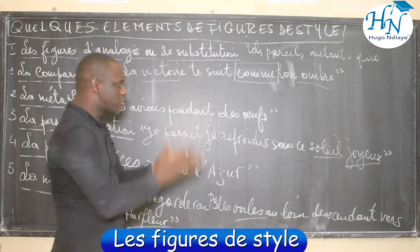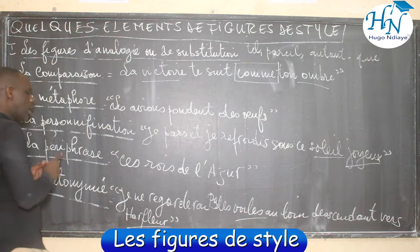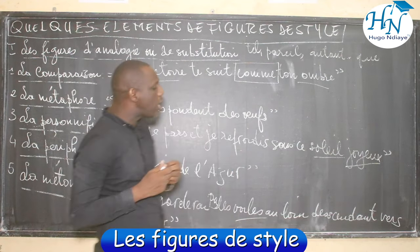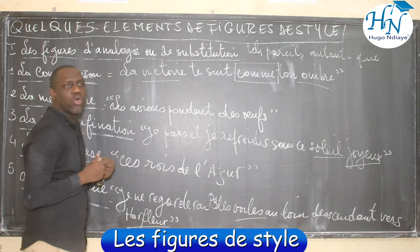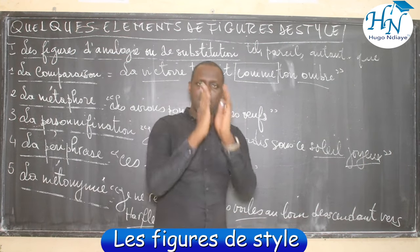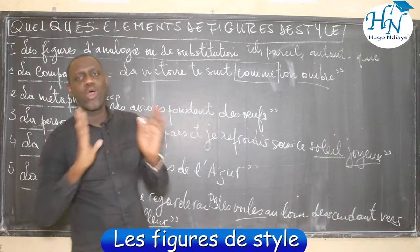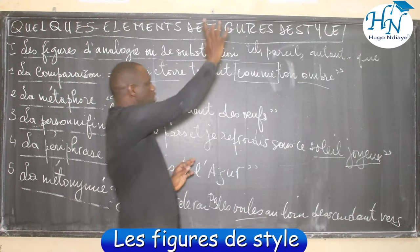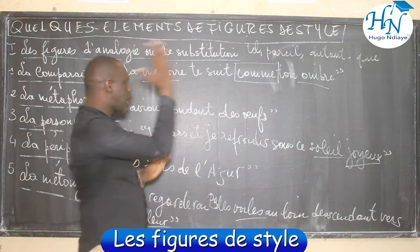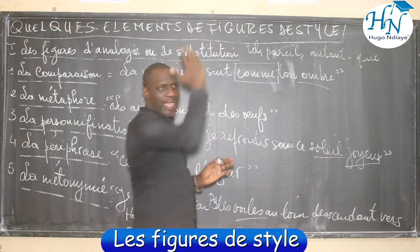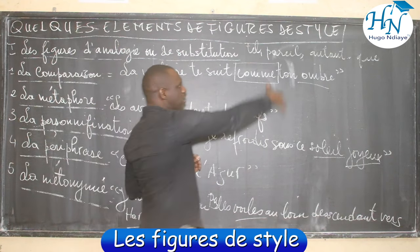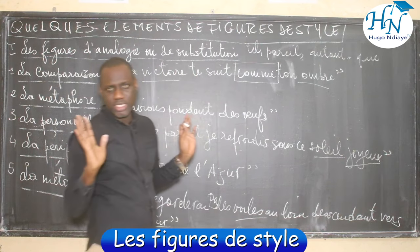Concernant la métonymie : « je ne regarderai pas les voiles au loin descendant vers Harfleur » — la valeur exprimée par cette figure de style, c'est que le poète n'a plus goût à la vie. Si on demande d'identifier les figures de style puis de donner l'idée exprimée par chacune d'elles, on donne d'abord la figure et on dégage la valeur exprimée, comme j'ai donné les exemples tout à l'heure.